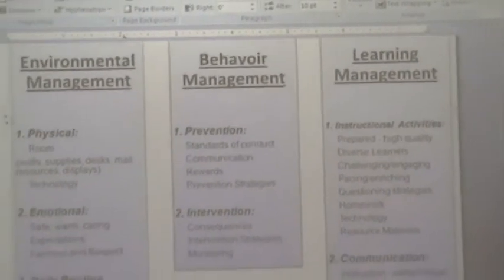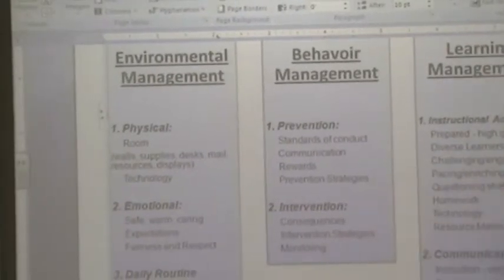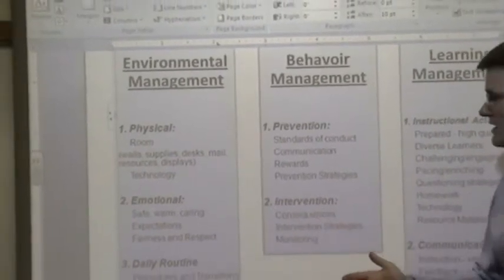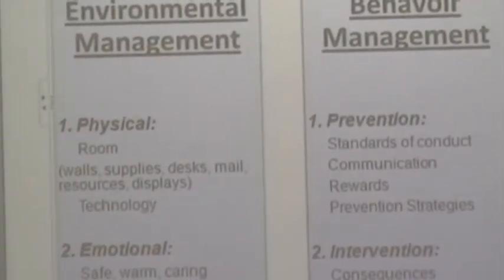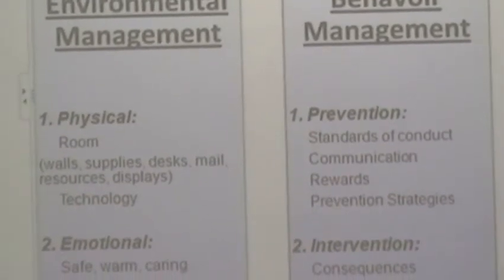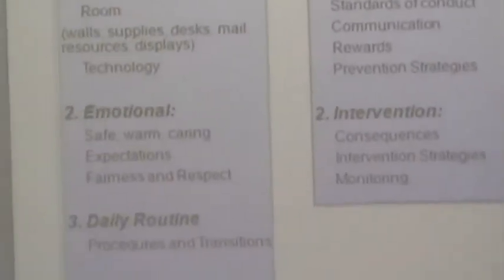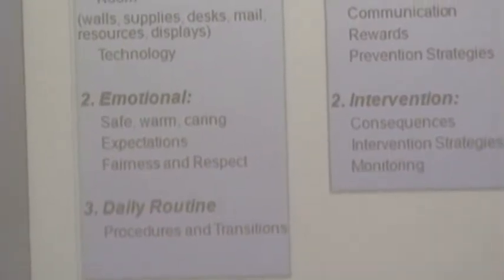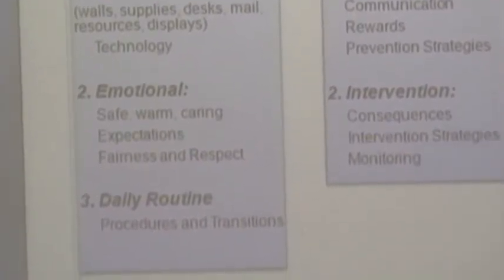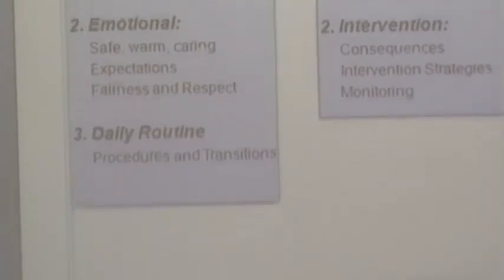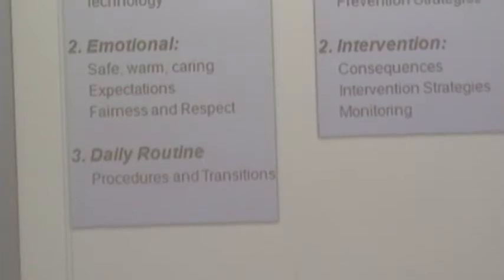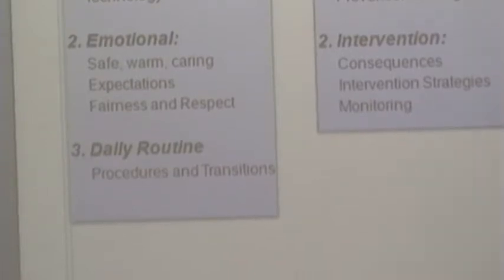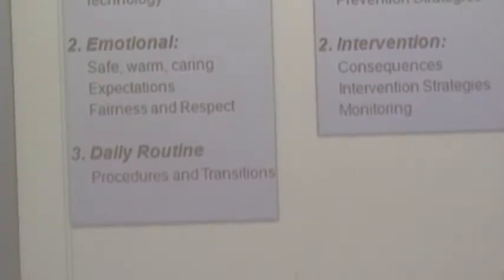Environmental management has three parts to it. Physical — what does the room look like — and technology, how technology is going to be used. The second part is called emotional: the kind of emotional environment I want to provide in my classroom — safe, warm, caring, expectations, and fairness and respect. The third part is daily routine, procedures and transitions, and how important they are.